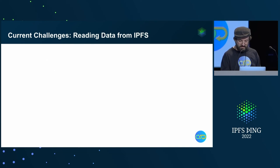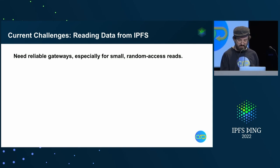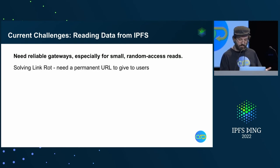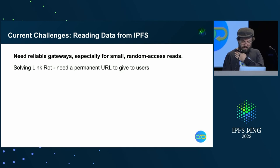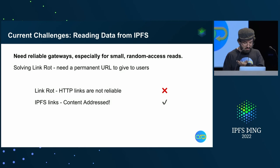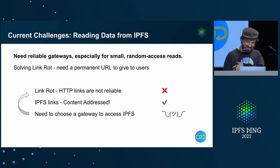Another challenge is reading from IPFS. Number one is a need for reliable gateways, especially for small random access reads. What often happens is, since it's pulling small amounts of data, the gateways often time out with a 429 error — at least dweb.link does, and I think ipfs.io also does. One of the reasons for web archiving is to solve link rot and have a permanent URL to give to users. HTTP links are not reliable, so IPFS links with content addressing — that's great. But we need to choose a gateway to access IPFS, so we're kind of back at link rot, because we need to give users an HTTP link to a gateway which may not always work.